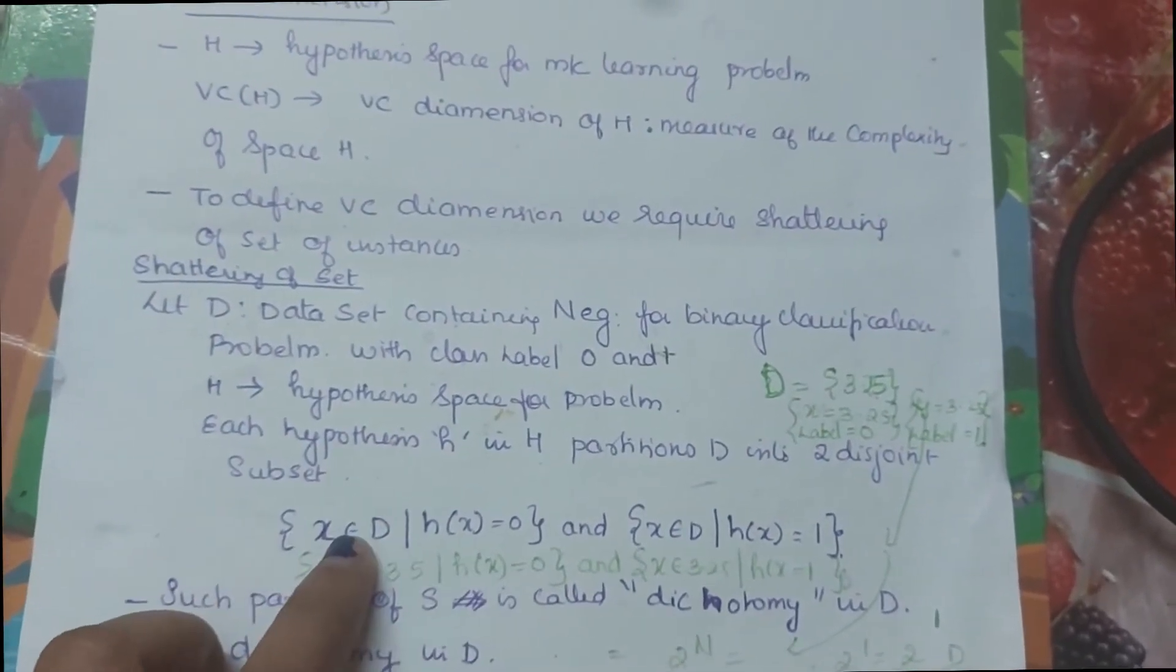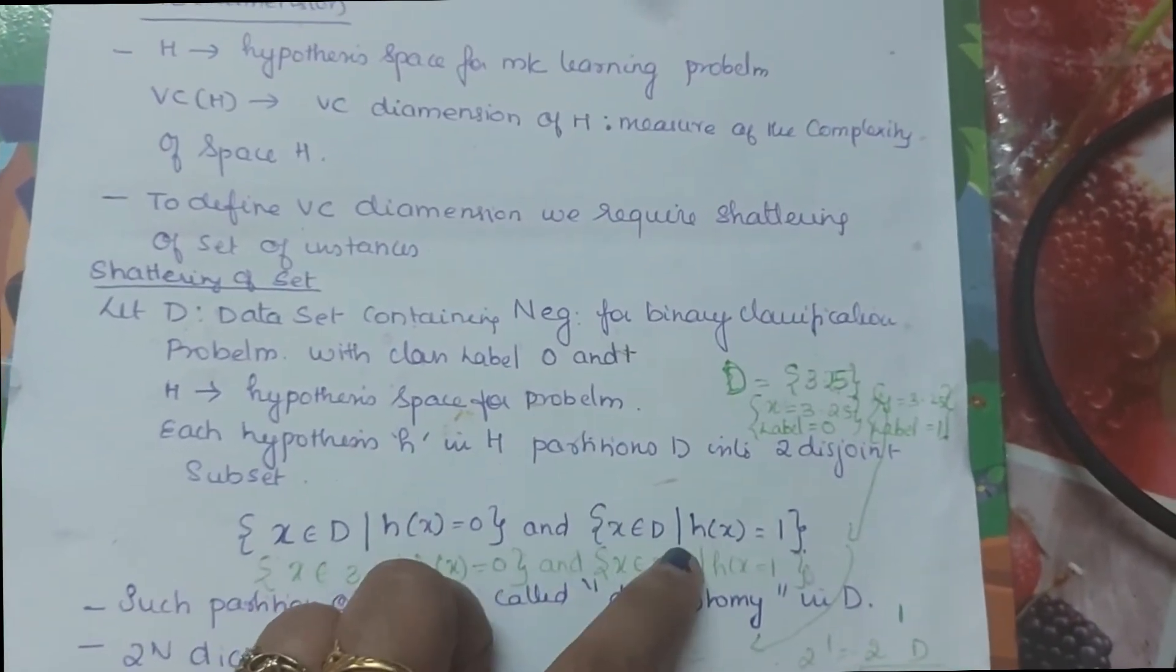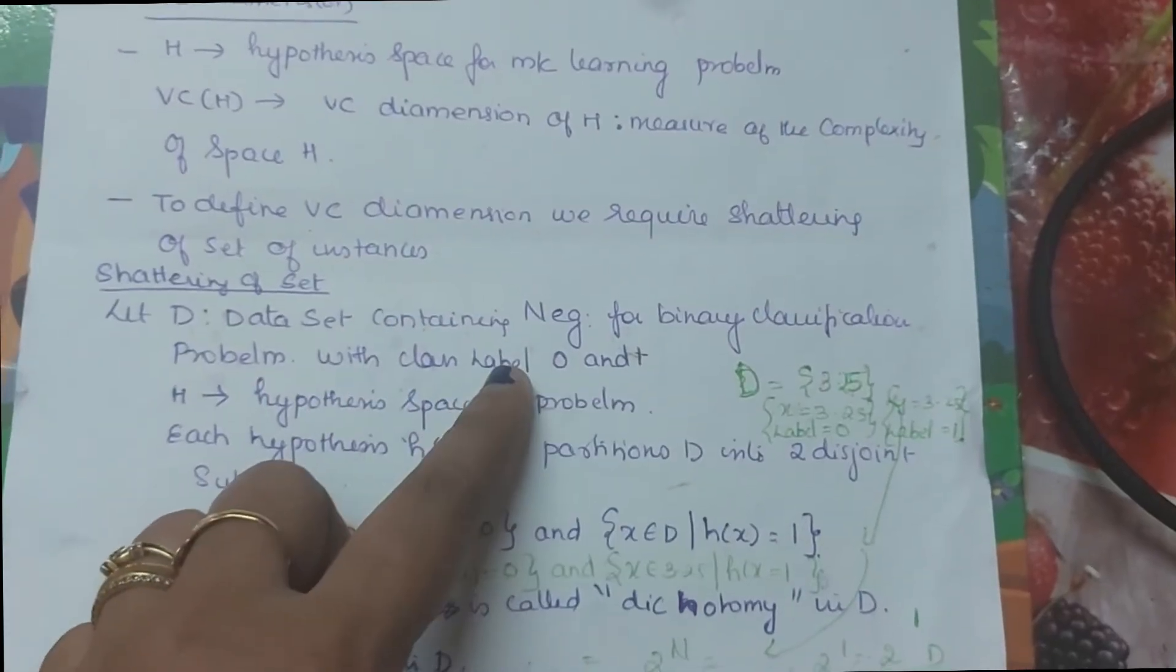In one disjoint set, Hypothesis value is 0. In another disjoint set, Hypothesis value is 1. We call it Hypothesis of X is equal to 1 if X is an element of S or 0 otherwise.